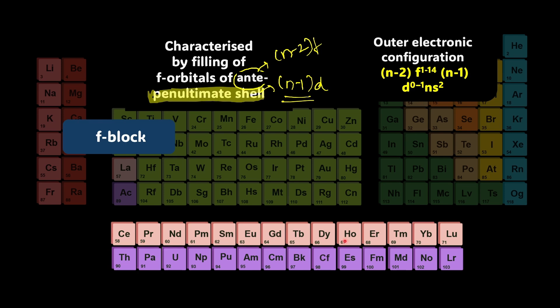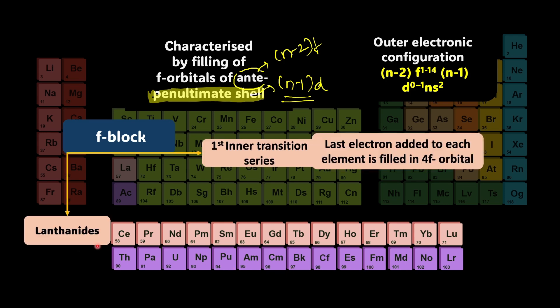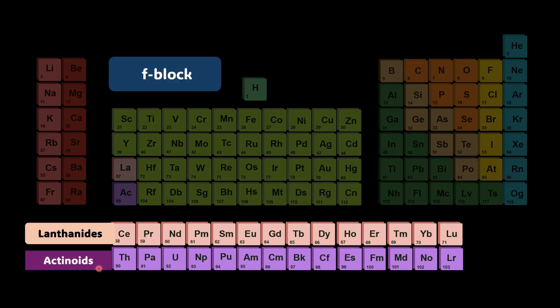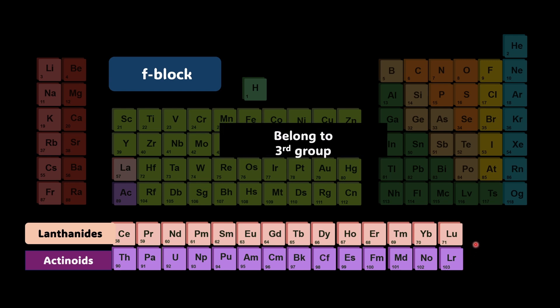Here we can see two colors. The first one is lanthanide series and this is first inner transition series because the last electron is added to the 4f orbital. If it's entering 5f orbital then that is second inner transition series also called actinoids. All these elements in f block belong to third group.